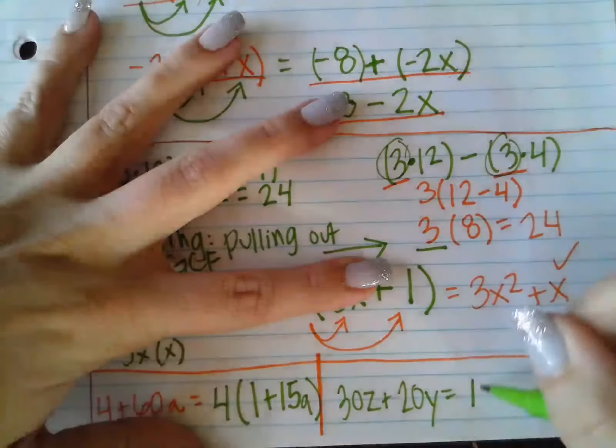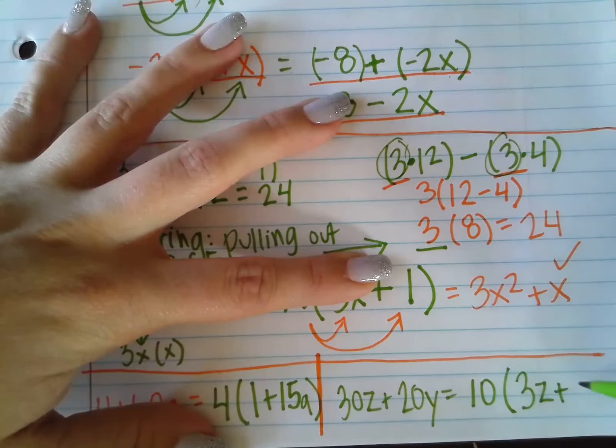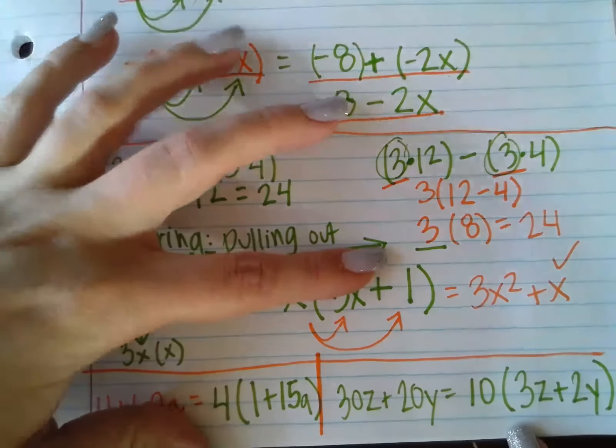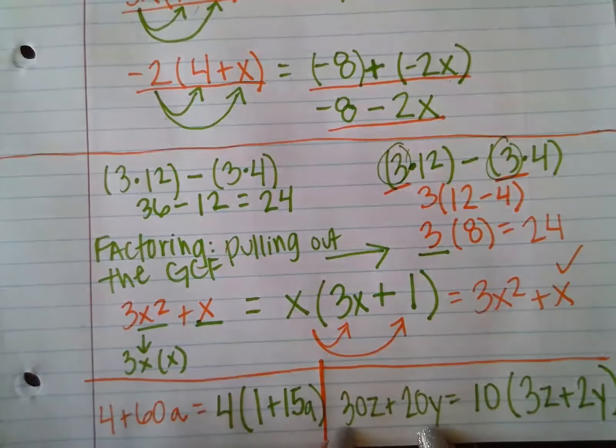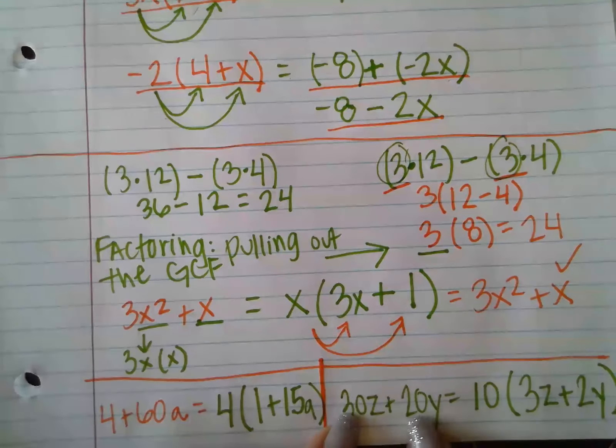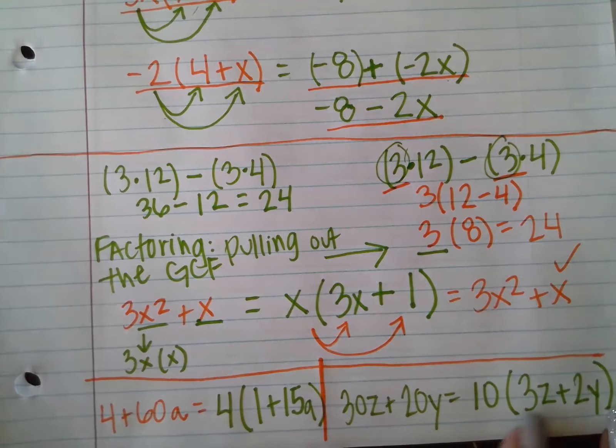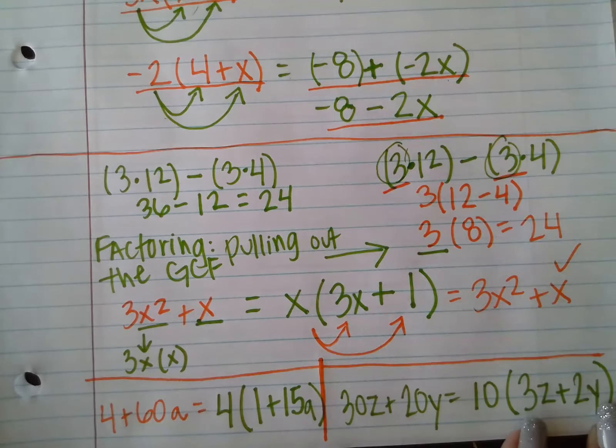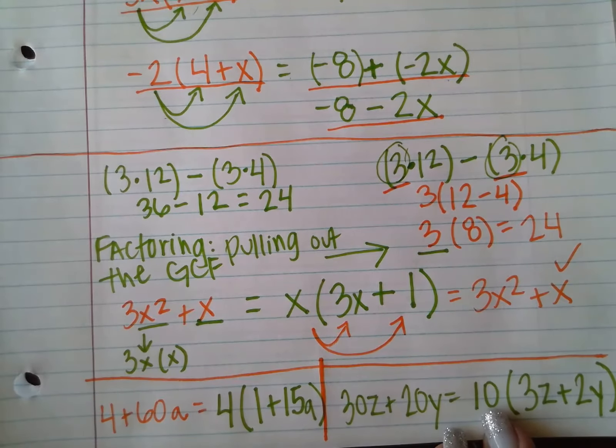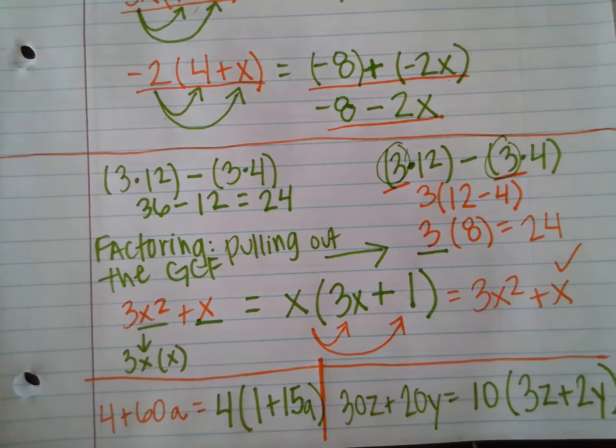So if you came up with 10 times the group 3Z plus 2Y, you would be correct. If you didn't come up with that, here's how we did it. We essentially pulled out a 10 from 20 and 30 because we can multiply 10 times something to make 30. We can multiply 10 times something to make 20. And Z and Y are not a common factor between the two terms. So we're just going to leave them attached to their appropriate numbers within the group. And what's left over is what we have to multiply by 10 to make 30, what we have to multiply by 10 to make 20, which is 3 and 2 respectively.